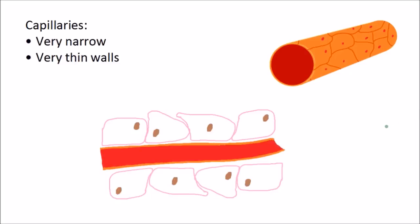Okay, the third type of blood vessel is the capillary. Capillaries are the smallest type of blood vessel and they form a huge network of tiny vessels linking the arteries to the veins. They're very narrow and they have very thin walls. So you can see how thin these walls are.